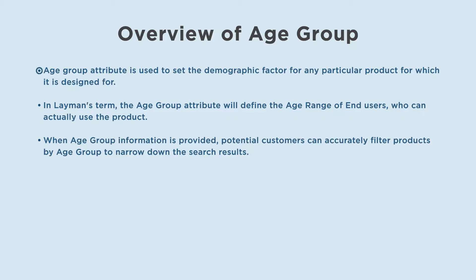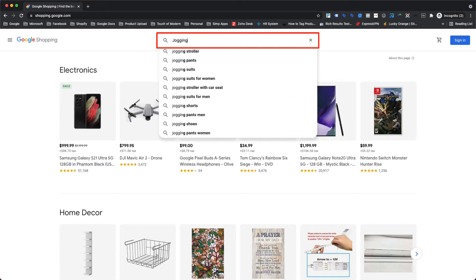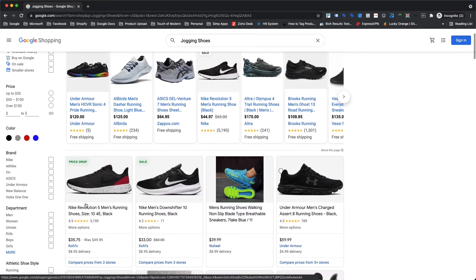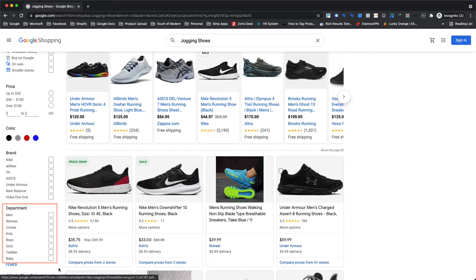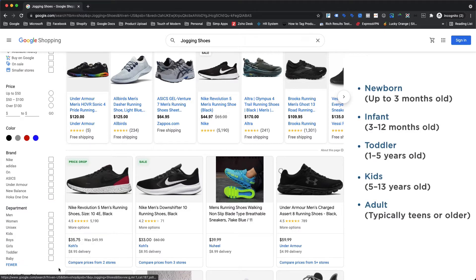The age group attribute is used to set the demographic factor for any particular product it is designed for. In layman's terms, the age group attribute defines the age range of end users who can actually use the product. When age group information is provided, potential customers can accurately filter products by age group to narrow down search results — like when searching for jogging shoes, there are sidebar options to filter results by age group.